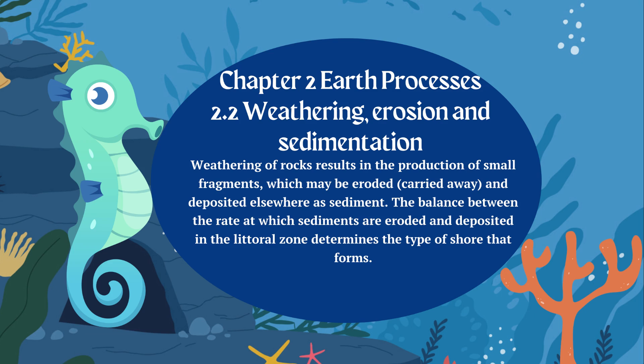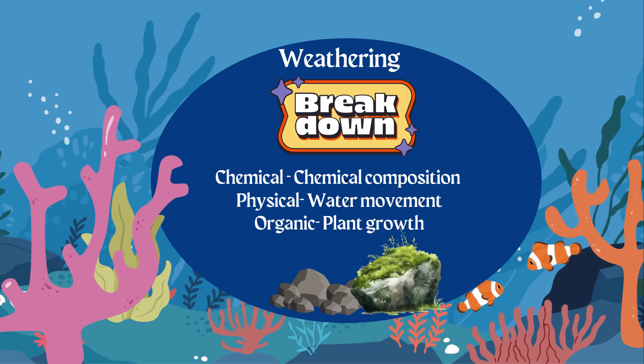So let's first pay attention to what we need to know for 2.2. 2.2 is weathering, erosion, and sedimentation. All three of these key terms play a part in the type of shoreline that is created — how different types of shorelines are formed because of weathering, erosion, and/or sedimentation.